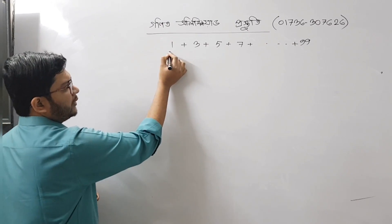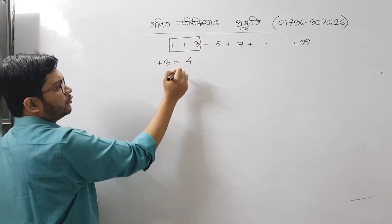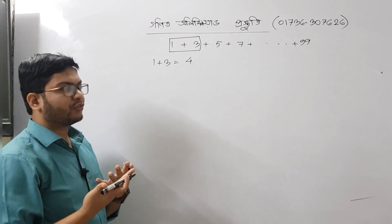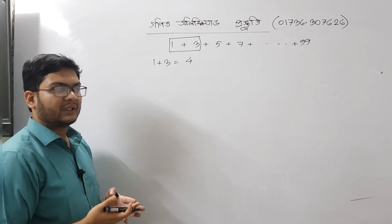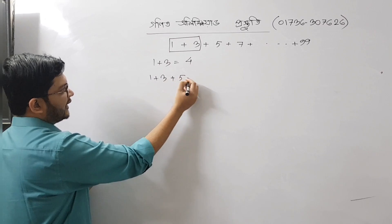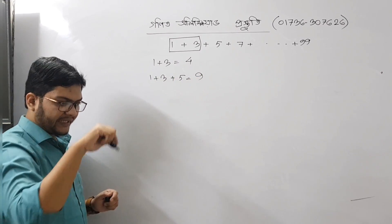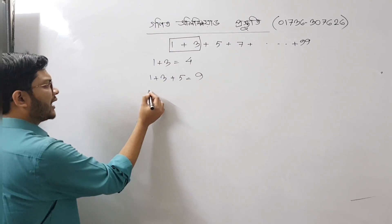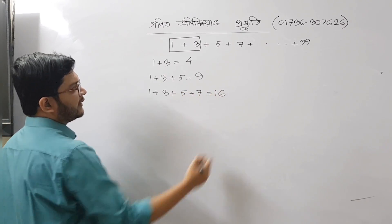The first step: 1 plus 3 equals 4. I will show you a little bit more — 2 into 2 is 4, which is 2 squared equals 4. Then 1 plus 3 plus 5 equals 9, which is 3 squared equals 9. And 1 plus 3 plus 5 plus 7 equals 16, which is 4 squared.